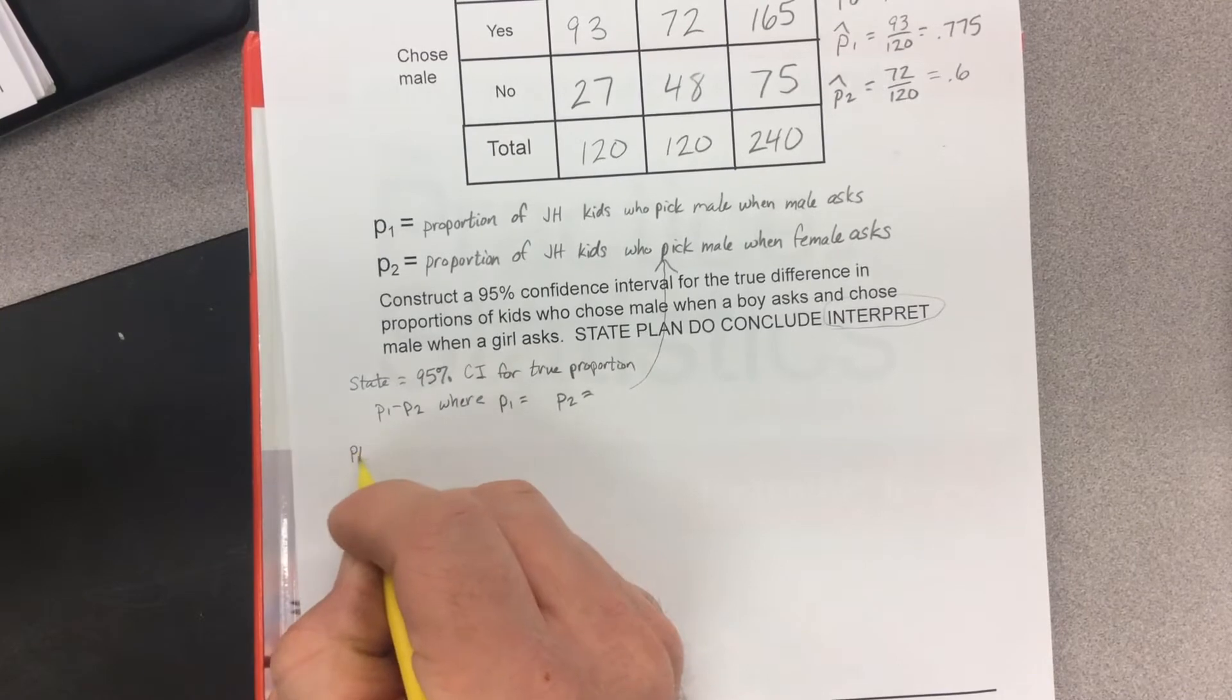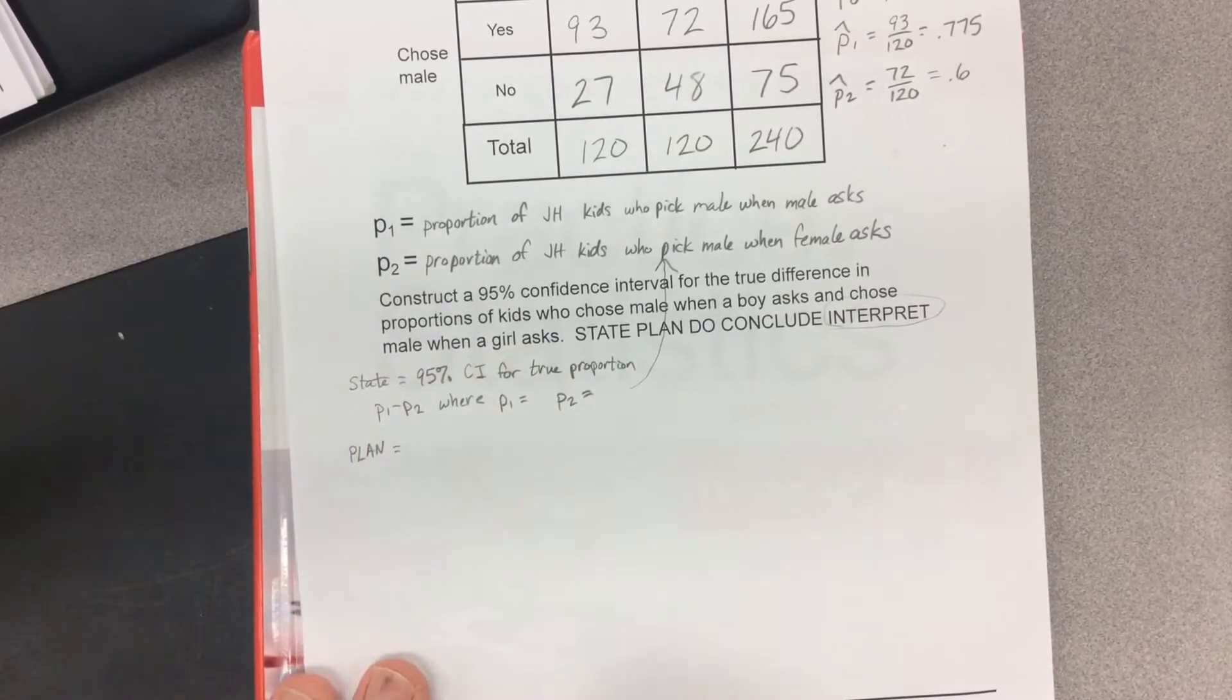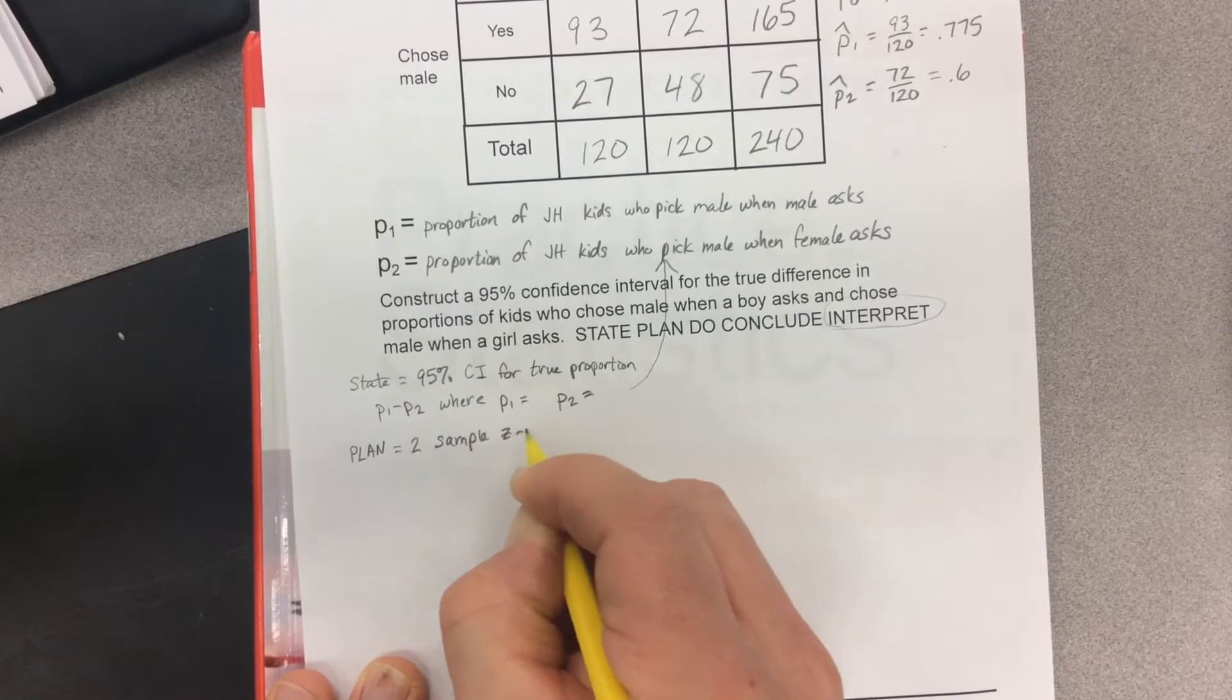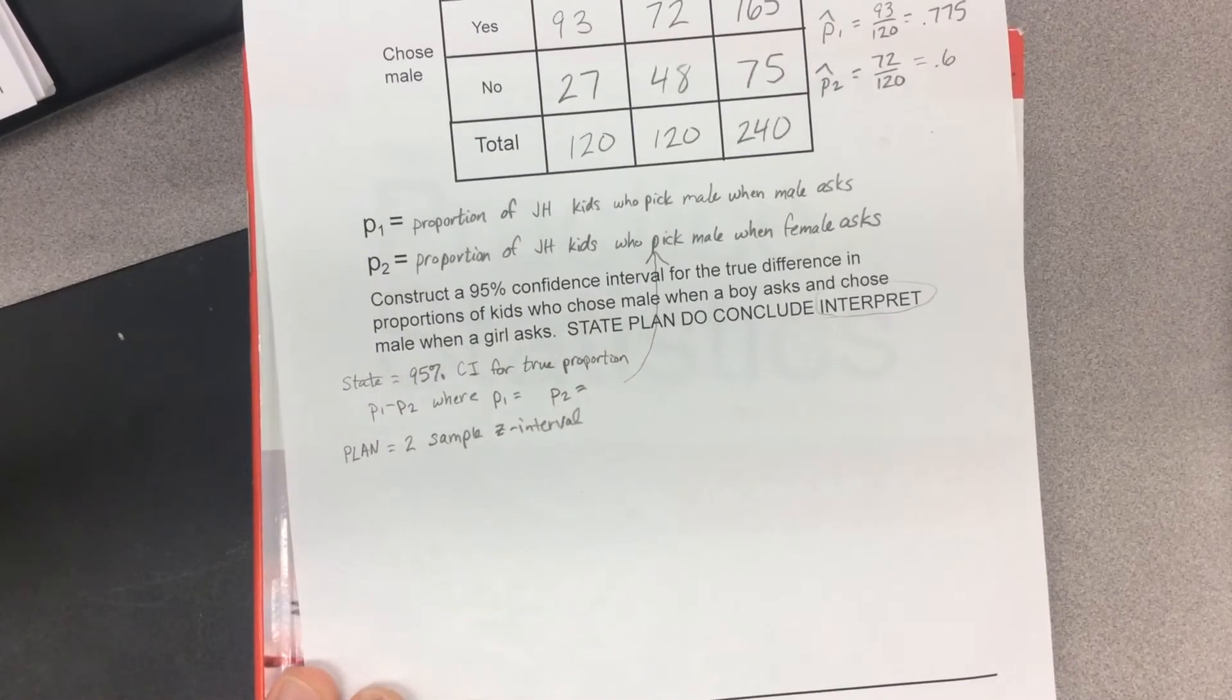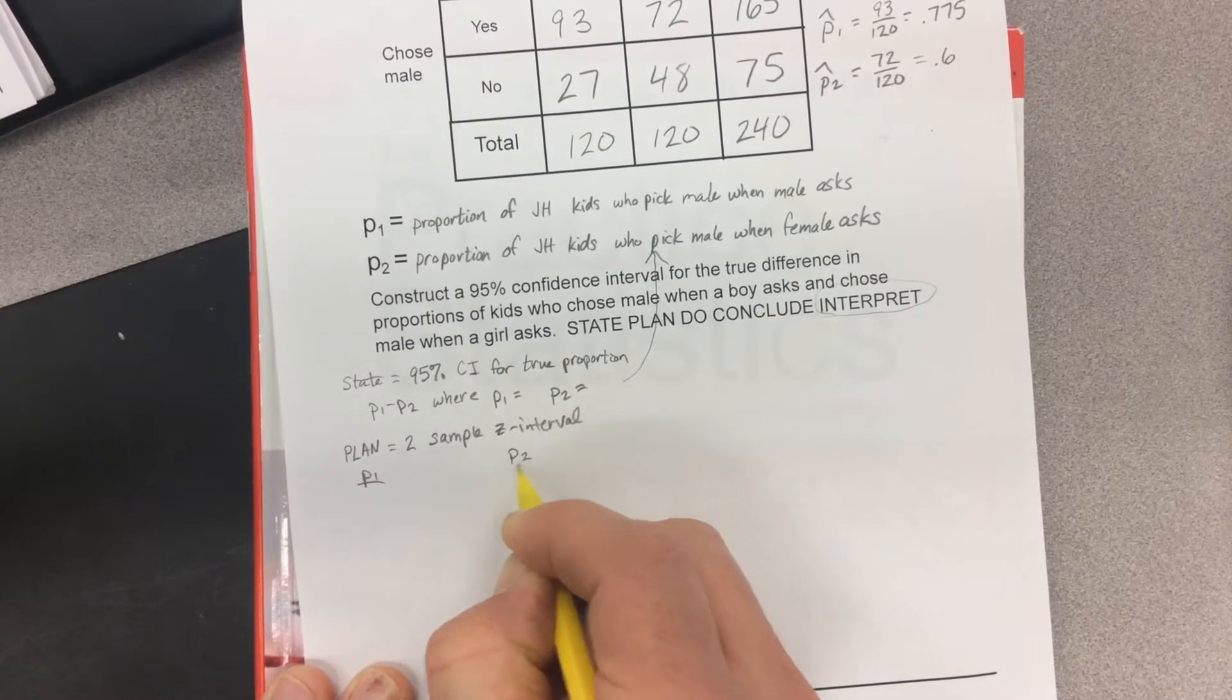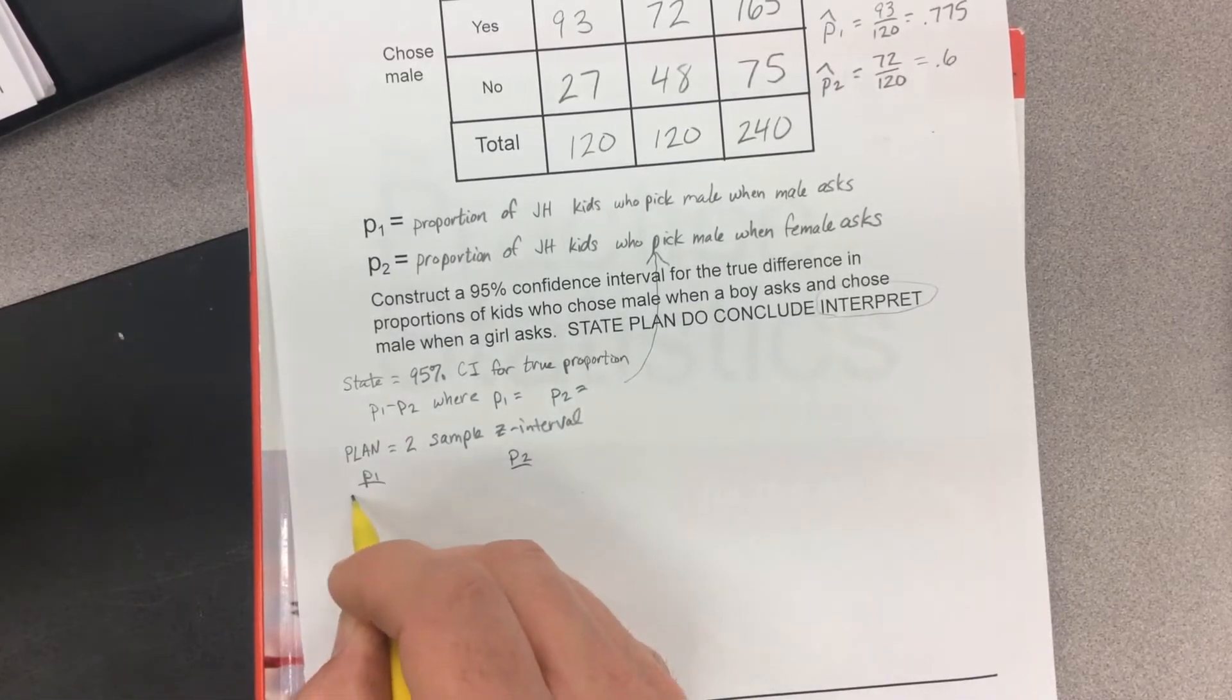Plan. This is proportions, so it's a Z interval. This is a two-sample Z interval. We've discussed the conditions quite extensively. I'm going to do them one more time as a reminder. When you do difference in proportions, you need to check both independently. You need to check the conditions for P1 and for P2.